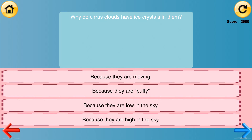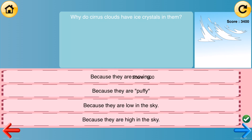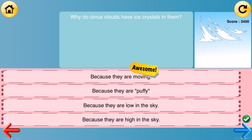Why do cirrus clouds have ice crystals in them? Because they are moving. Because they are puffy. Because they are low in the sky. Because they are high in the sky. Correct answer: because they are high in the sky.